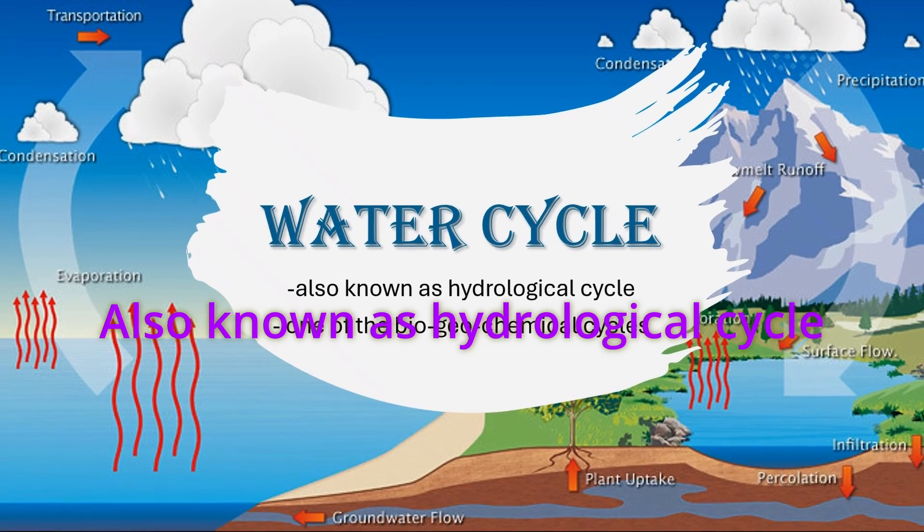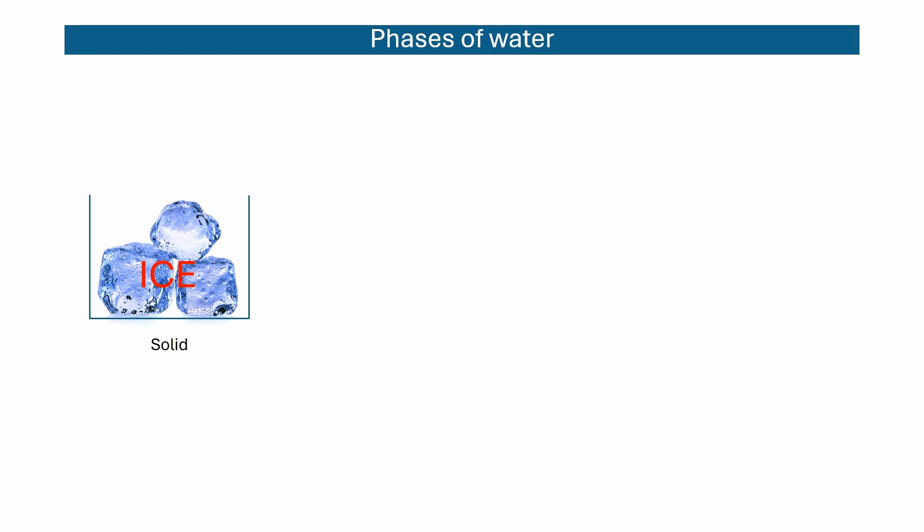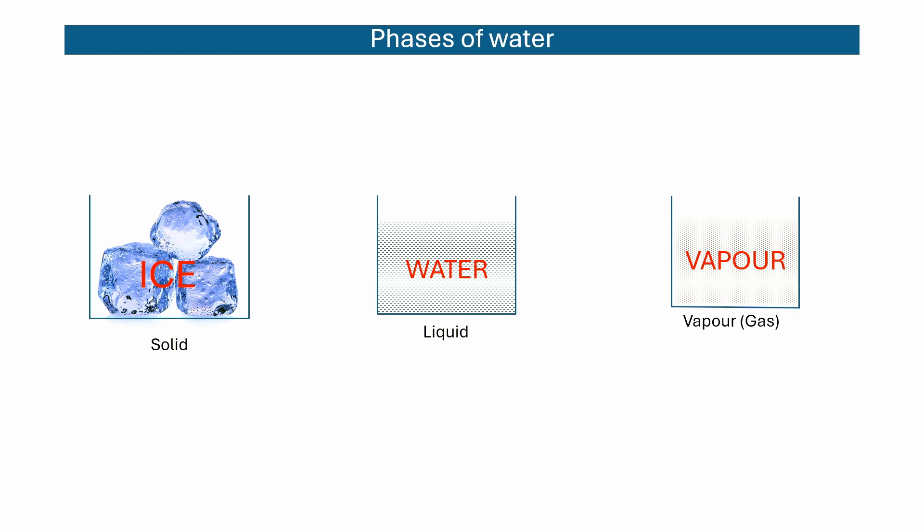So, let's begin. Before we dive into the water cycle, let's recall your previous knowledge. Water exists in three different phases: solid, liquid, and vapor.